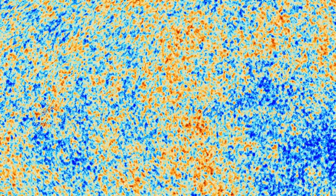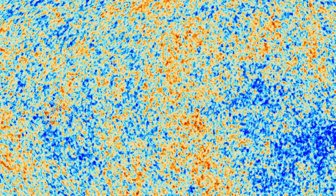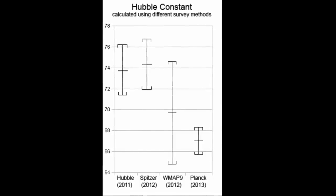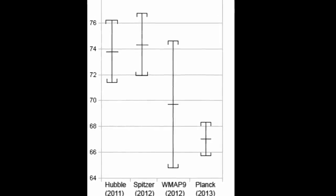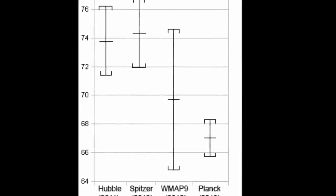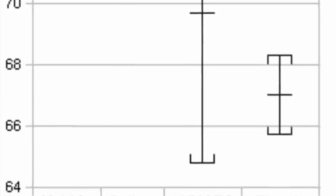But then other studies using very different observations and different telescopes found something different. The biggest such study was the Planck collaboration, which used observations from the early universe — the cosmic microwave background — light from when the universe was only about 380,000 years old. Interestingly, these observations predicted the value to be about 67.5 ± 0.5 km/s per megaparsec. When plotted on a graph, the Spitzer and Hubble values clustered near 73–74, while Planck was near 67 — and the error bars don't even come close to overlapping.